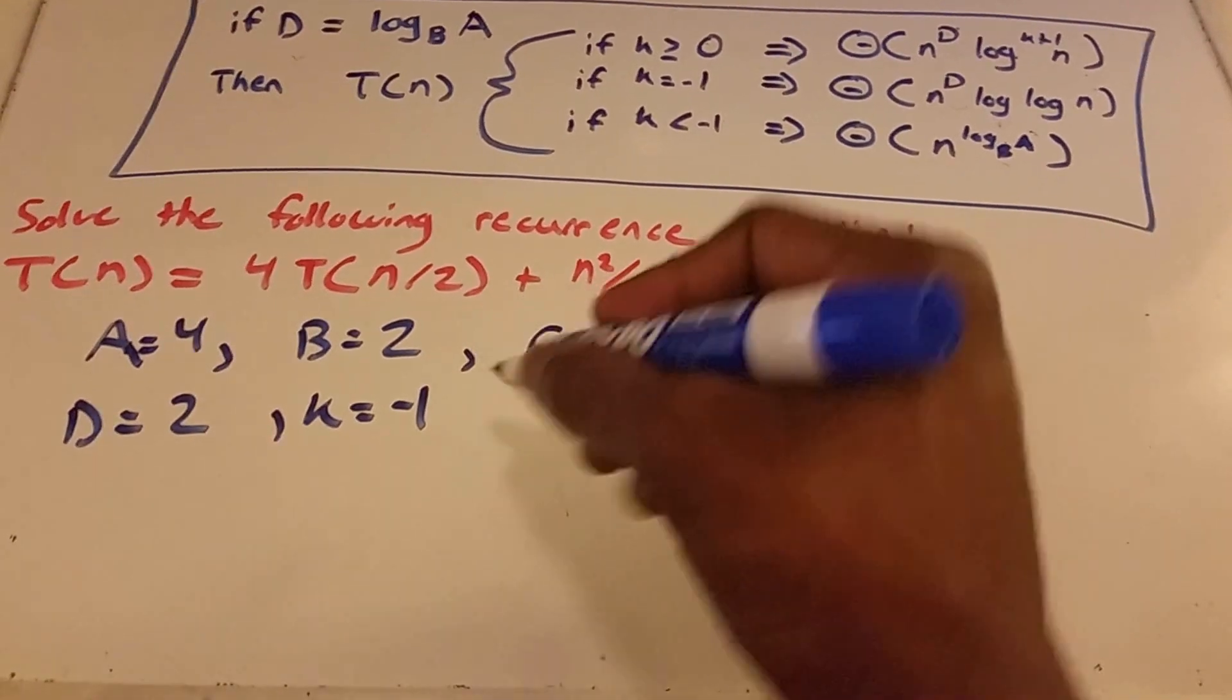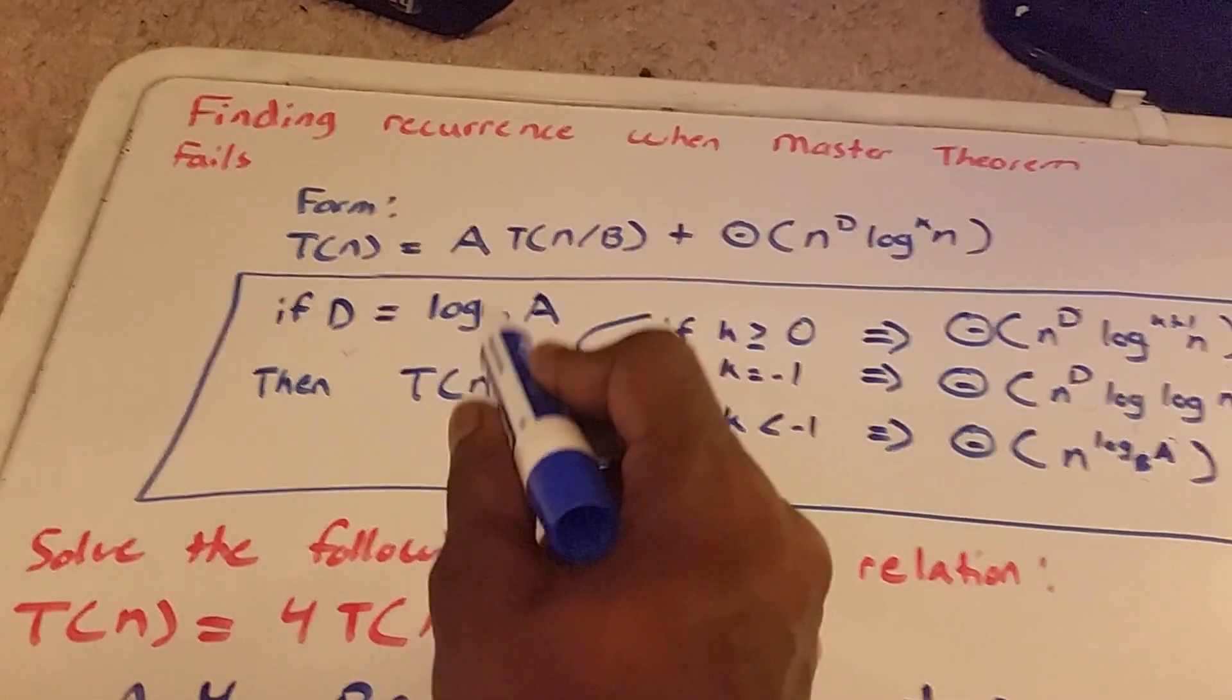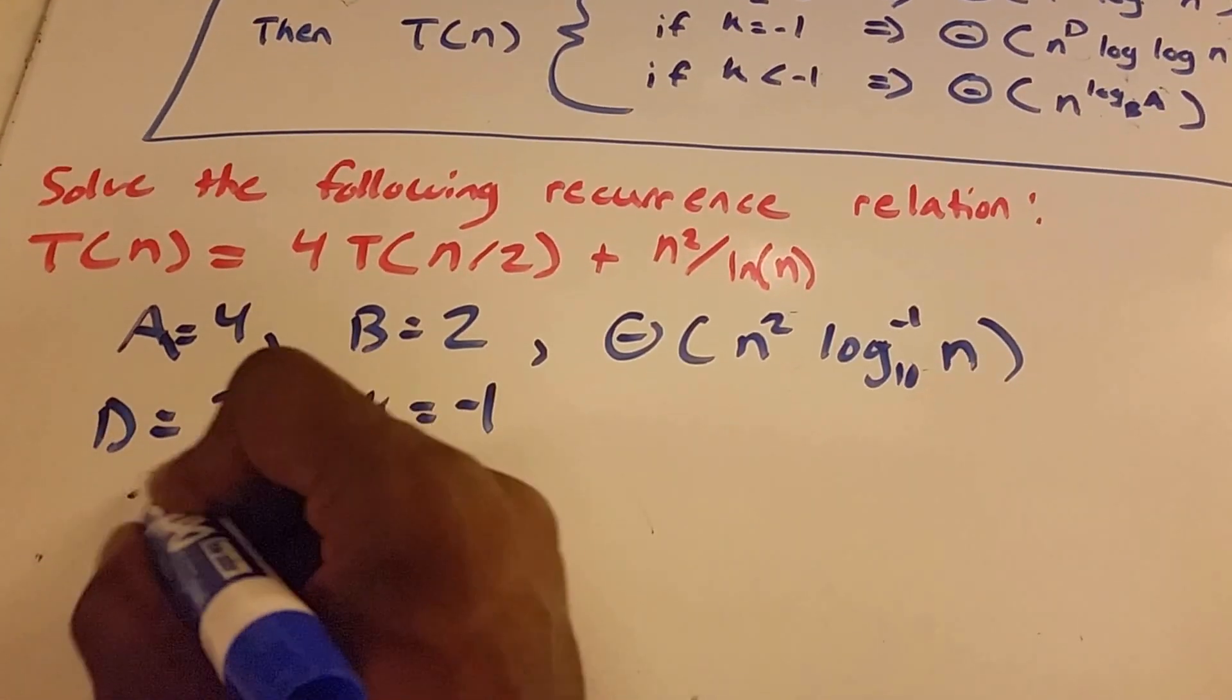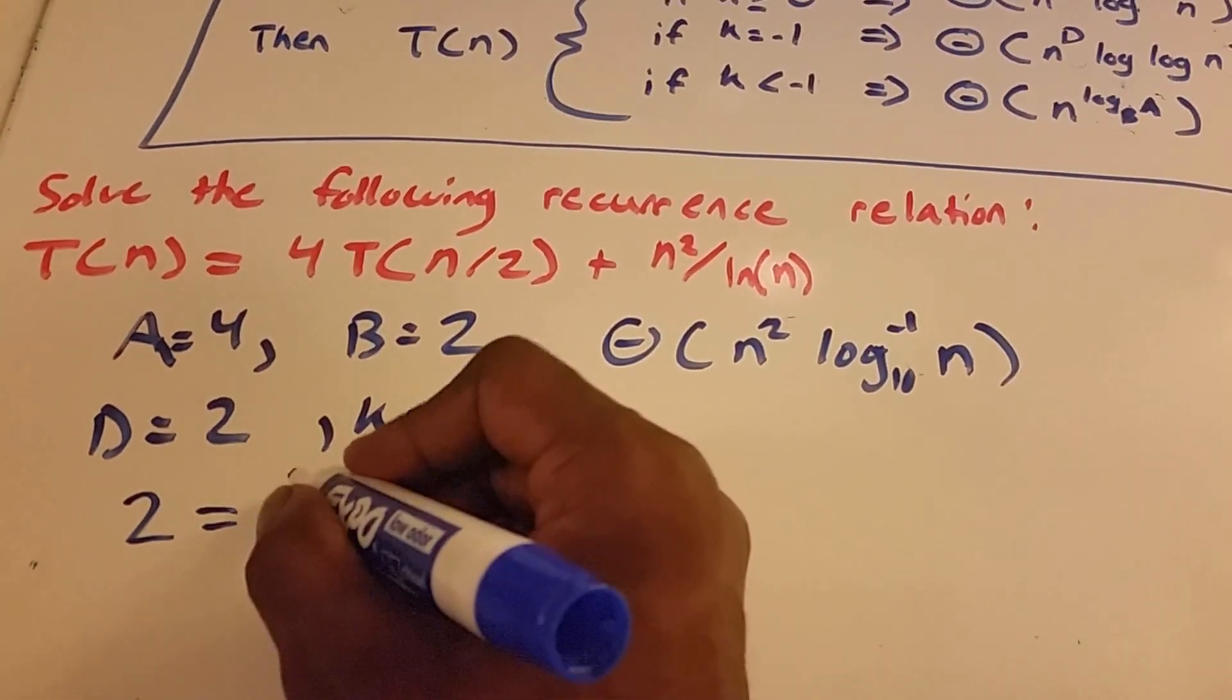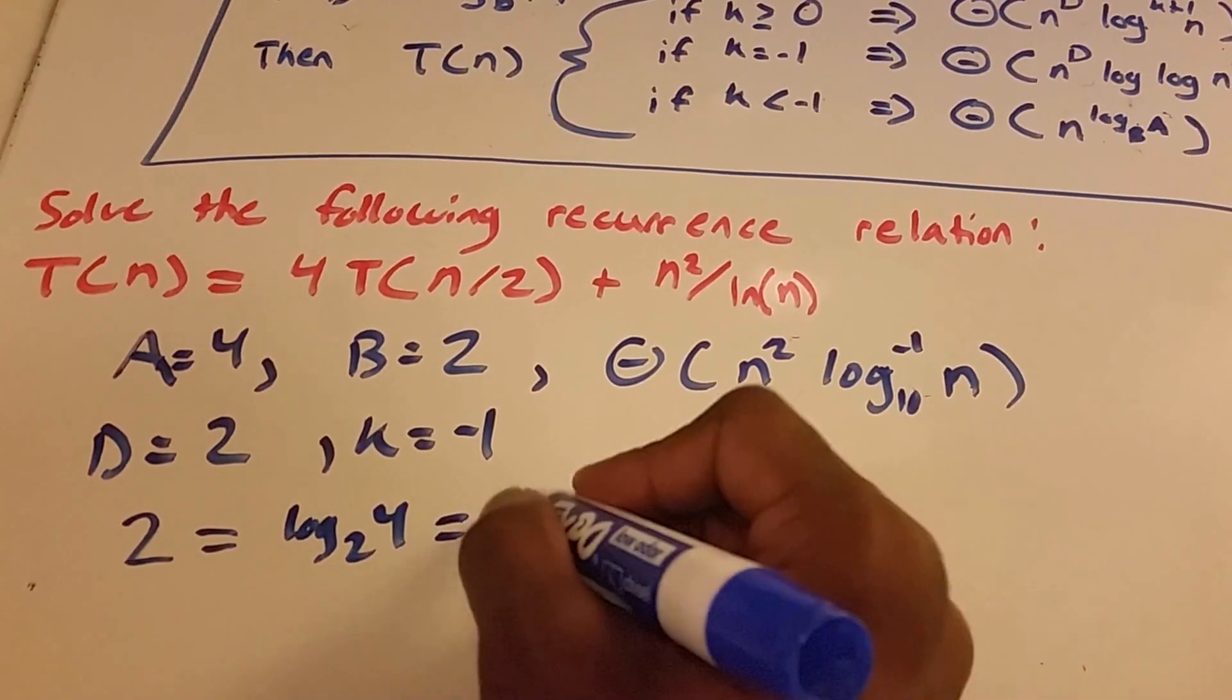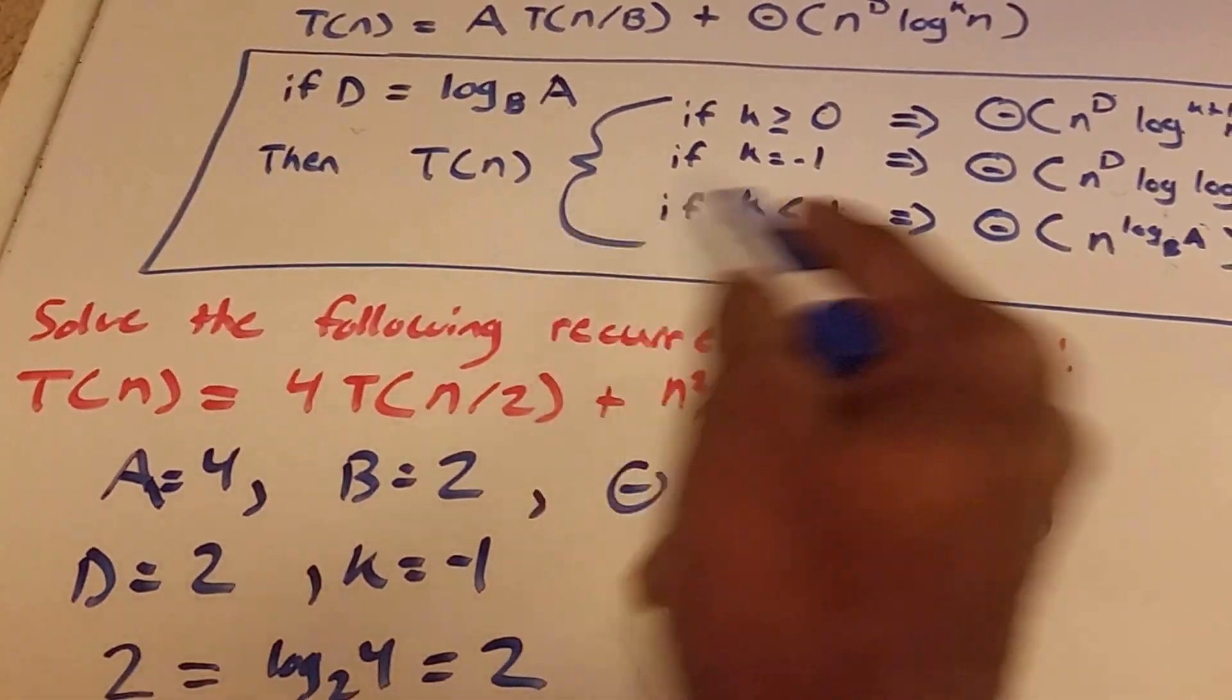So let's figure out, we said that if D equals log base B of A, so if 2 is equal to log base 2 of 4, well, that just equals 2, so they are equal, then we can do this here.